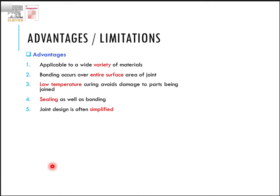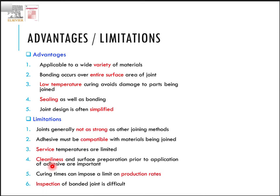The joint design is quite simplified. Some limitations of adhesive bonding are that it is not very strong, so sometimes you need a hybrid joint — for example, riveting combined with adhesive. You can use different varieties of joints together, and adhesive bonding can significantly enhance the joint itself.